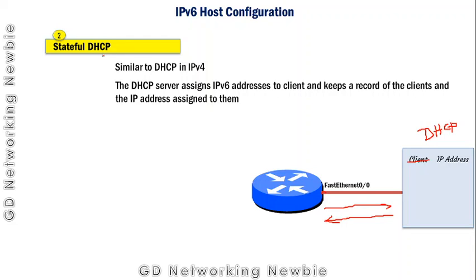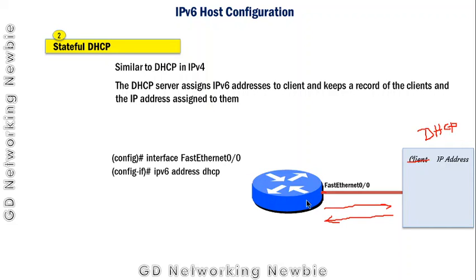Since there is stateful DHCP, there is also a stateless DHCP server, which does not keep a record of the client and the IPv6 address assigned to it. In stateless there is no record keeping, while in stateful record keeping is present. In both cases, the IPv6 address is assigned dynamically. To configure a router interface for DHCP, navigate to that interface and use the command 'IPv6 address DHCP'. This interface will then dynamically request an IPv6 address from the DHCP server.